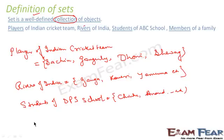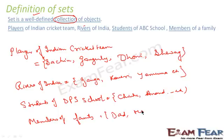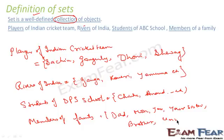When I say set of members of a family, this will include your dad, your mom, you, your sister, your brother, uncle, auntie, etc. So when you see all of these, these are all examples of sets.